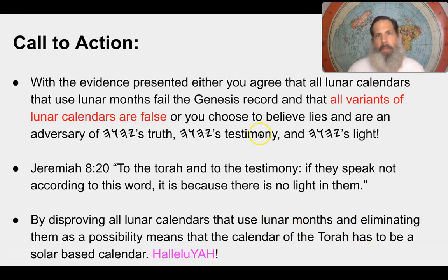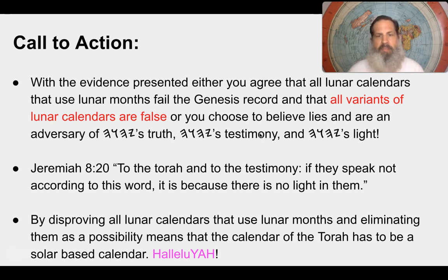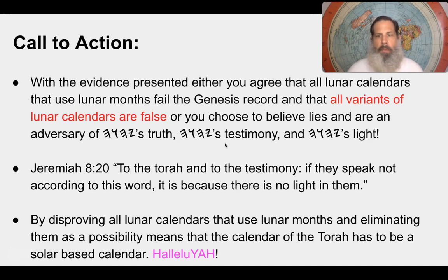Now is the call to action. With the mathematical evidence just presented, either you agree that all lunar calendars using lunar months fail the Genesis 7 and 8 record and that all variants are false — or you continue to believe lies and are an adversary of Yahuwah's truth, testimony, and light. As Isaiah 8:20 warns: to the Torah and to the testimony — if they speak not according to this word, it is because there is no light in them. By disproving all lunar calendars, the calendar of the Torah has to be a solar-based calendar.